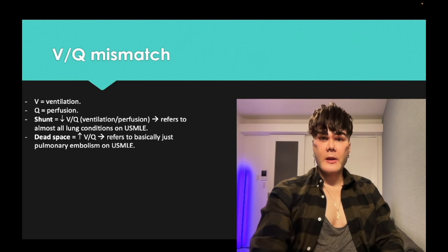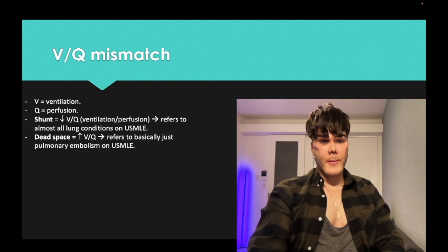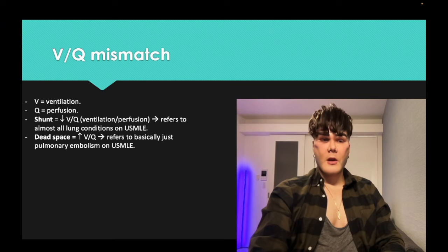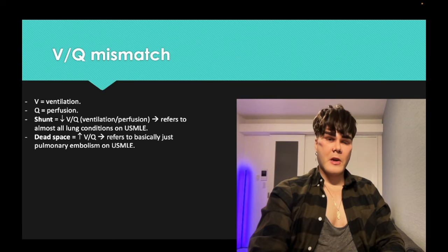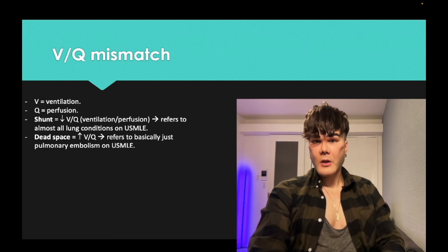VQ mismatch: V is ventilation, Q is perfusion. Shunt is decreased V/Q — ventilation reduced relative to perfusion. Dead space is increased V/Q — perfusion decreased relative to ventilation. Shunt is the answer for all lung conditions on USMLE: asthma, COPD, pulmonary fibrosis — it doesn't matter. Dead space is the answer for pulmonary embolism, or other emboli like fat or amniotic fluid. If it's not an embolus to the lung, it's shunt.